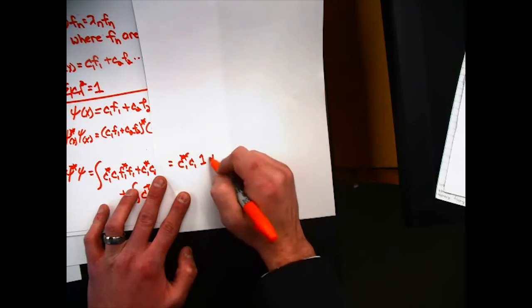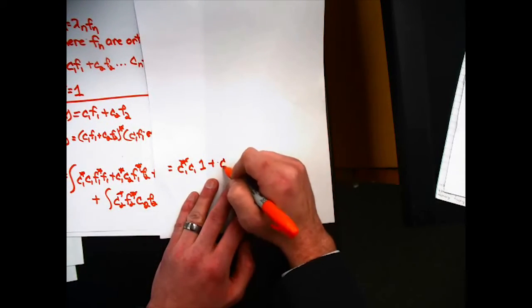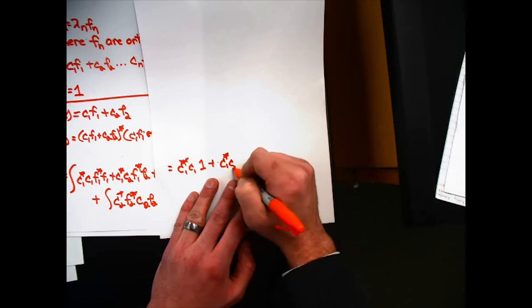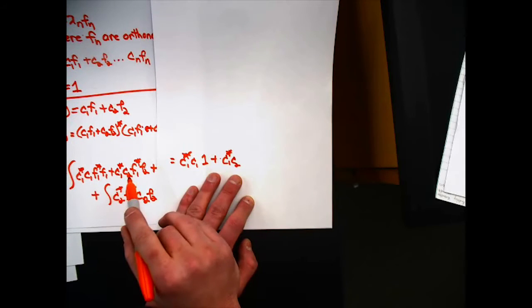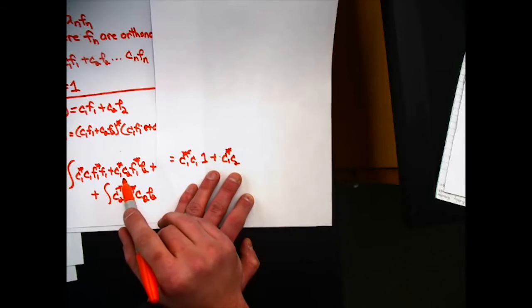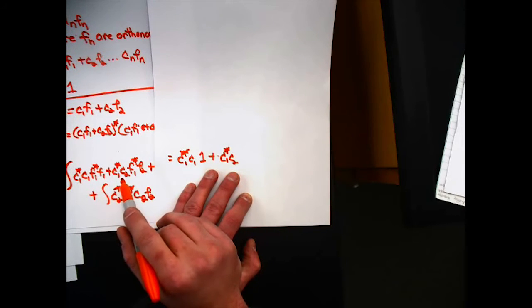Plus c1 star c2 times the integral over f1 times f2. If these functions are orthogonal, then that has to be equal to 0. That integral is equal to 0.